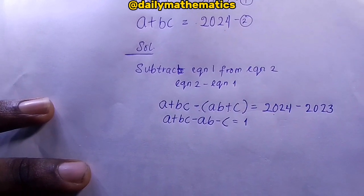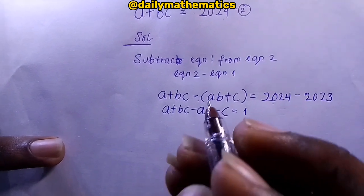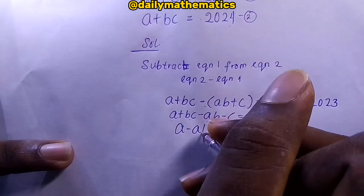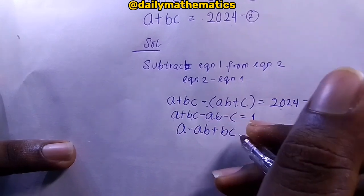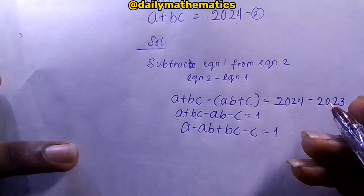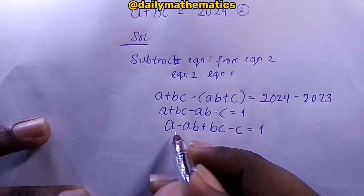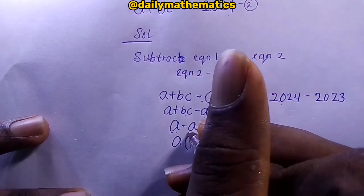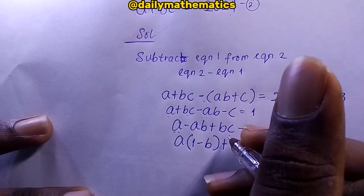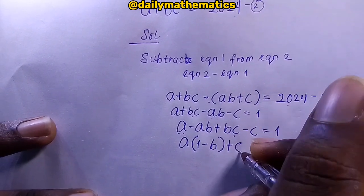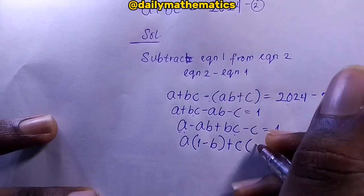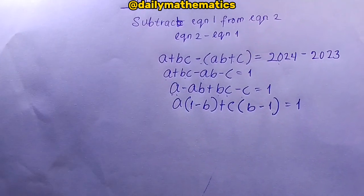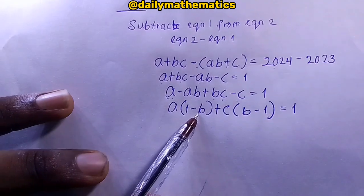From here we have 'a' and 'a', and 'c' and 'c', so we group them: a minus ab plus bc minus c equals 1. We can factorize — bring out 'a' from the first two terms giving a(1 minus b), and bring out 'c' from the last two terms giving c(b minus 1), so we have a(1 minus b) plus c(b minus 1) equals 1.